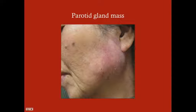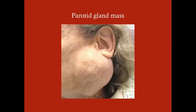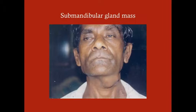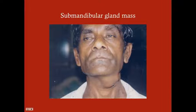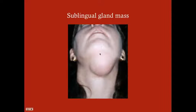Here's a parotid gland mass right in the parotid region around the temporomandibular joint area. Here's a submandibular gland mass — it can be difficult to distinguish from a sublingual gland mass, but submandibular masses tend to be more on one side. Here's a bilateral occurrence, and here's a sublingual gland mass more at the midline.